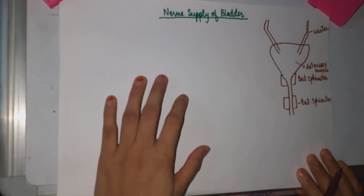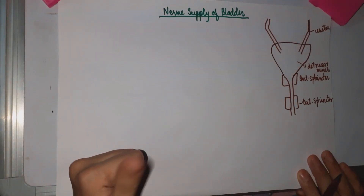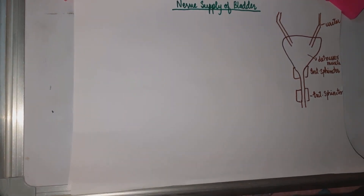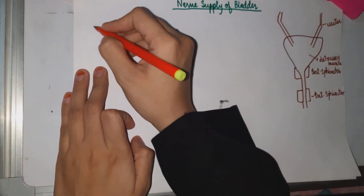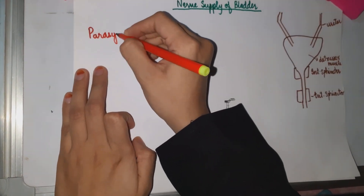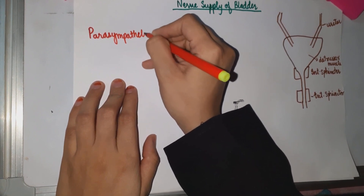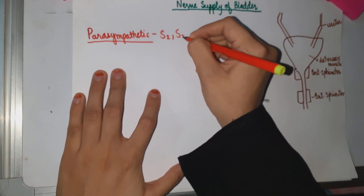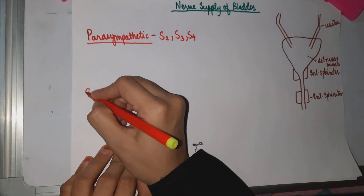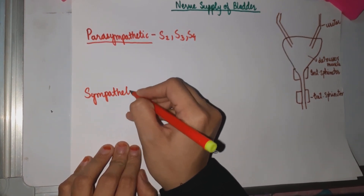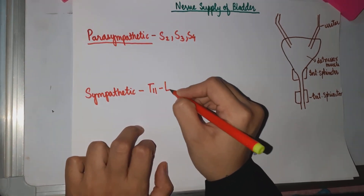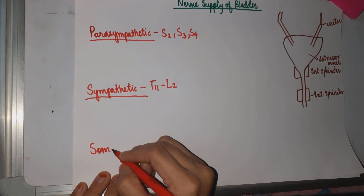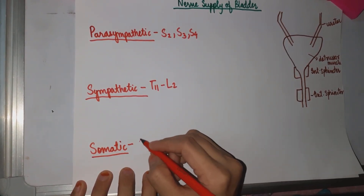For the nerve supply, we have to remember three things. First, it has sympathetic, parasympathetic, and somatic nerve supply. Parasympathetic comes from S2, S3, and S4 segments. Sympathetic comes from T11 to L2. And somatic — which is under voluntary control — also comes from S2, S3, and S4.